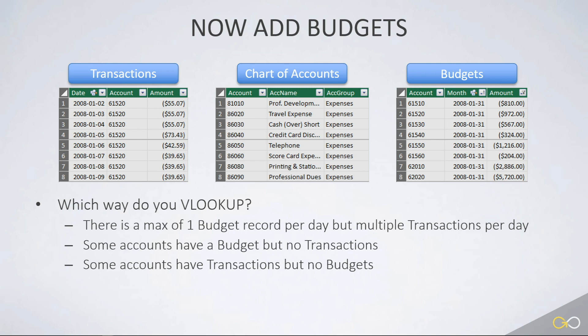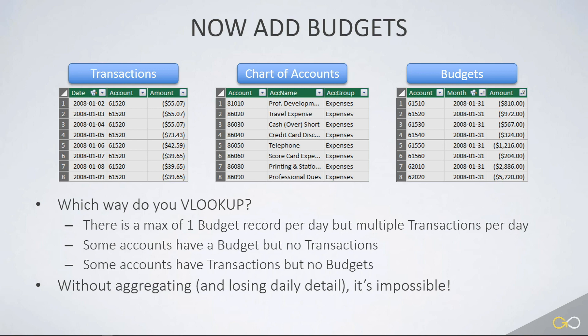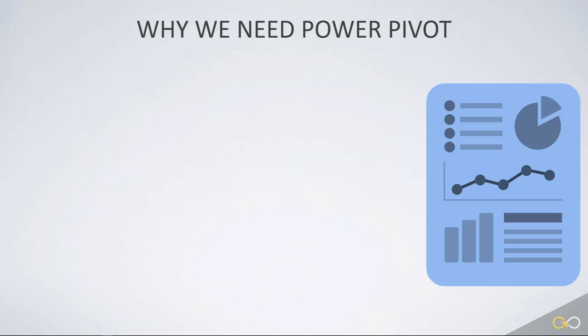Either of those cases is going to cause problems because there will be gaps in your data. Do you start with a chart of accounts and look at transactions? You would hope there's an account for every single transaction posted, but if there are multiple transactions per day and only one record in the chart of accounts, that's not going to help you. Likewise with budgets. There's a really big challenge here: without aggregating and losing daily detail, it is impossible to get this into a regular pivot table. This is the unpivotable problem, and this is why we need Power Pivot.